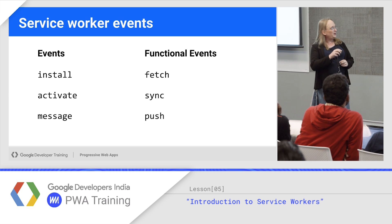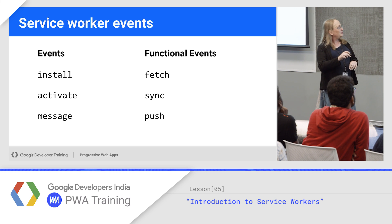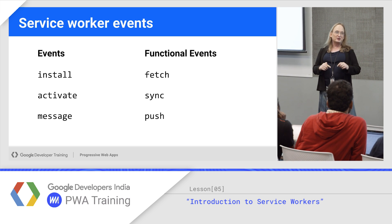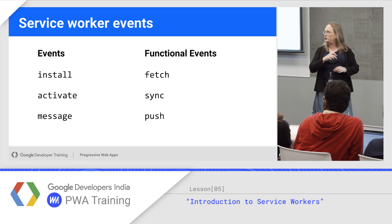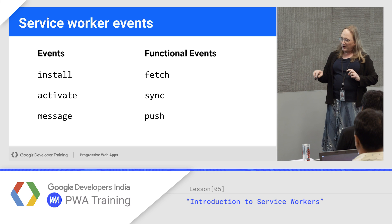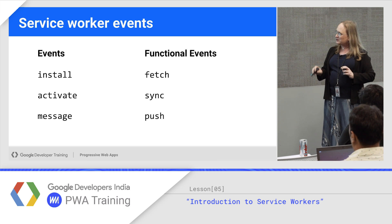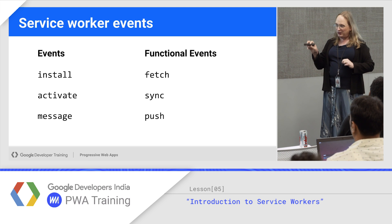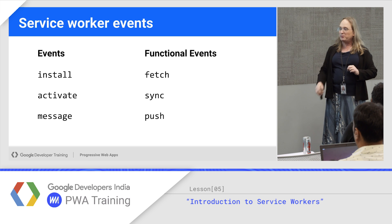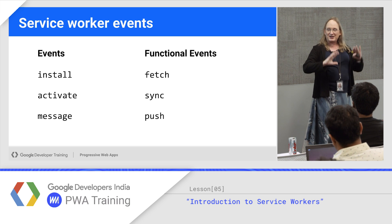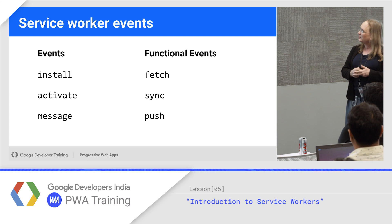Events you get: install and activate, as covered. Message — if you call postMessage to send a message to a service worker, it gets the message event. That's how you communicate between the service worker and your main code. Can you auto-purge the cache? Officially no, because service worker is entirely controlled by code you supply. But partially yes — there's an open source library called SWToolbox that Google published which includes that management code. Most people use SWToolbox and let it write the cache management code for you.